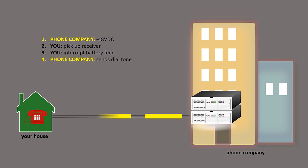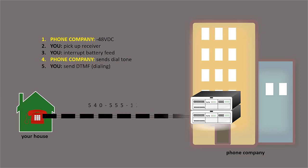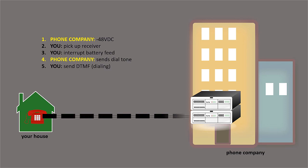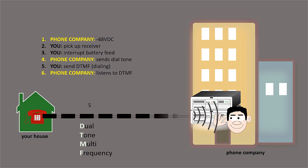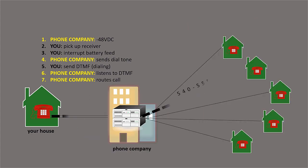The phone company then sends dial tone to your phone, which is essentially asking what number you would like to reach. When you hear this dial tone, you dial a number. The signal sent to the phone company when you press the buttons on your phone is known as Dual Tone Multi-Frequency, or DTMF. The phone company then listens to these DTMF tones and determines where to route your call.